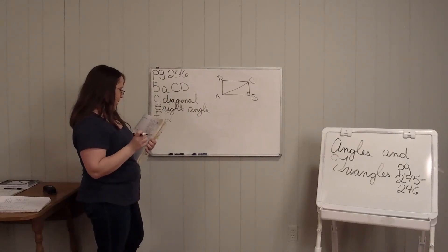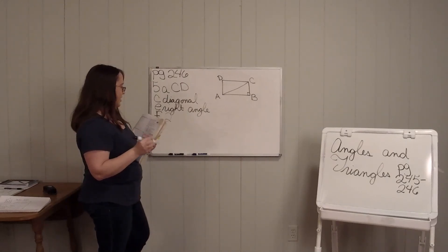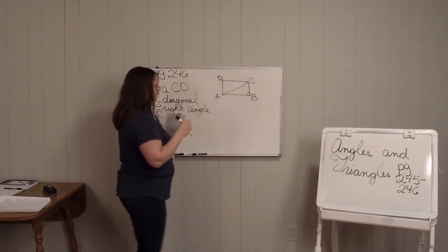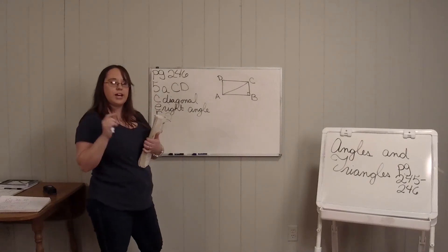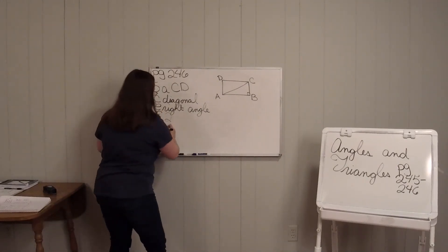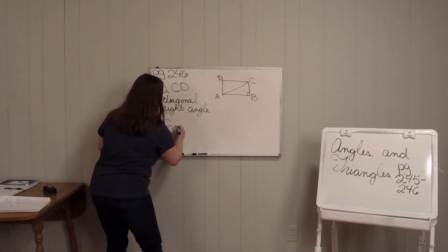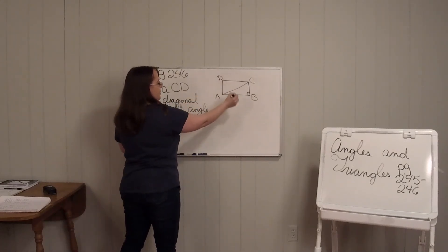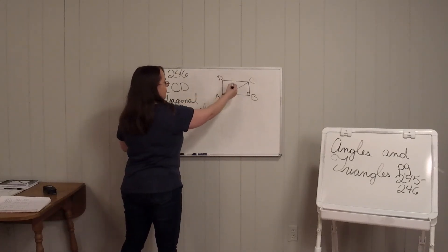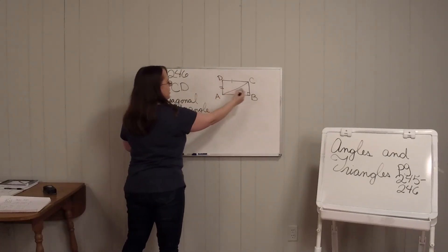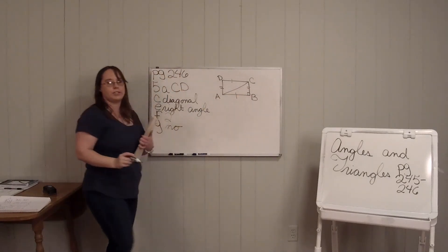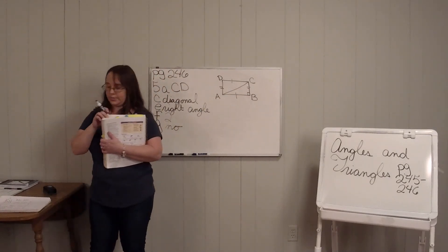And then G: are all the sides of the rectangle congruent — are all the sides the exact same? No, they're not. These two sides are the same, and then these two sides are the same, so they're not all congruent.